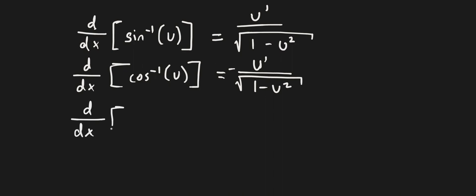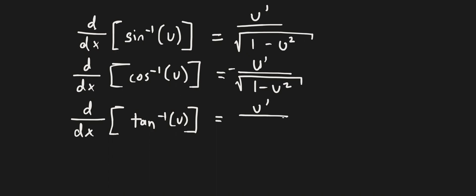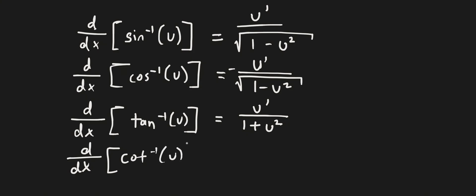The derivative of tangent inverse of u is actually quite easy — it's just u prime all over 1 plus u squared. When you look at cotangent inverse of u, it's the same exact thing, 1 plus u squared on the bottom, but we have a negative in front. That's the only difference. Again, we have a c, so we have a negative.